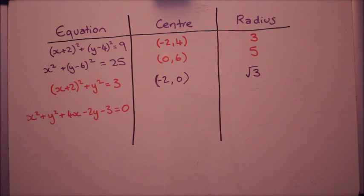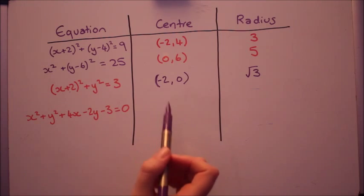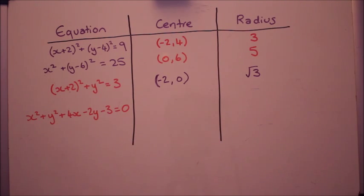This next one's a bit of a challenge. What you need to do, it's not in the correct form to pick out the center and the radius easily at the moment. So a bit of a challenge question. The way to do it is to complete the square for both x and y. If you're happy doing that, please do have a go. If you have not done completing the square yet, it might be worth just hopping over to the completing the square video and coming back.